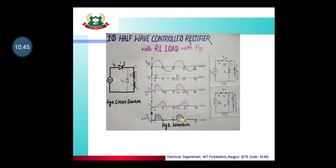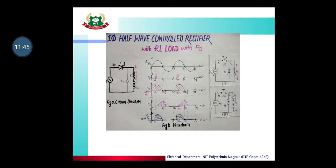The inductor releases its stored energy through the freewheeling diode. So the supply voltage cannot appear across the load — the load voltage becomes 0. The negative voltage that used to appear is now replaced by 0, due to the freewheeling diode connected across the load. The inductor current is released and the negative voltage is removed. So when a freewheeling diode is used, the negative load voltage is removed, and the load voltage waveform looks similar to that obtained with a resistive load — the average output voltage also improves.